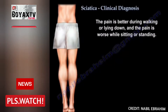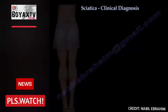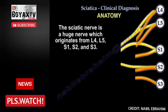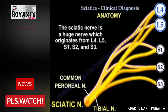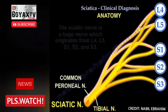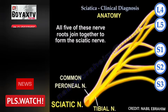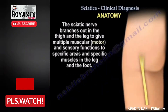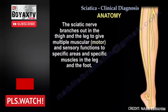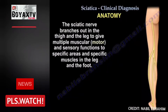The sciatic nerve has five nerve roots: two from the lumbar spine — L4 and L5 — and three from the sacral spine — S1, S2, and S3. All five nerve roots bundle together to form the sciatic nerve, which then branches out again in the thigh and leg to provide motor and sensory functions to specific areas and muscles of the leg and foot.